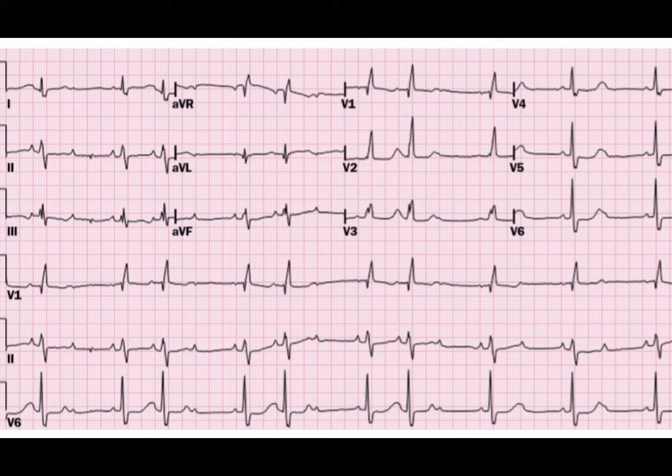Since the P wave is upright in lead 1 and lead 2, we can know for sure that it is coming from the sinus node. However, the R-to-R interval is not constant, meaning the P wave is not passing properly to the ventricles through the AV node. So it is safe to assume that there is some problem with AV nodal conduction.